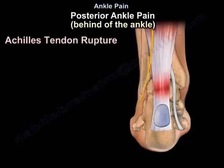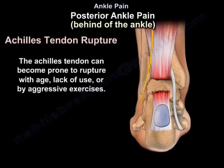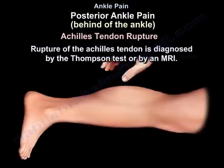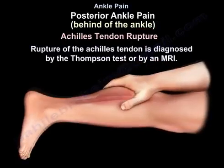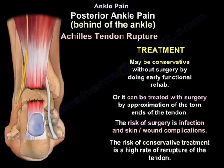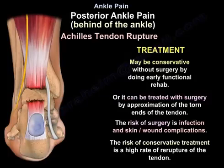Achilles tendon rupture can occur with age, lack of use, or aggressive exercises. Rupture is diagnosed by the Thompson test or by MRI. Treatment may be conservative without surgery, using early functional rehabilitation, or it can be treated surgically by approximation of the torn ends. The risk of surgery includes infection and wound complications, while the risk of conservative treatment is a high rate of re-rupture.